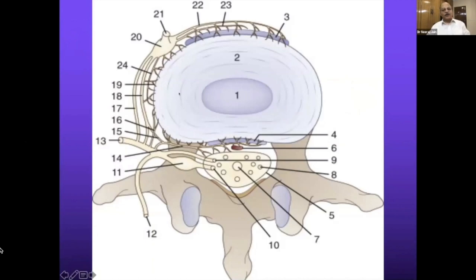There is the recurrent meningeal nerve — the sinuvertebral nerve — which is causing pain. Many people are doing targeted intervention on this nerve. Because it supplies the outer annular fibers and the posterior longitudinal ligament, you can really take care of that pain component.